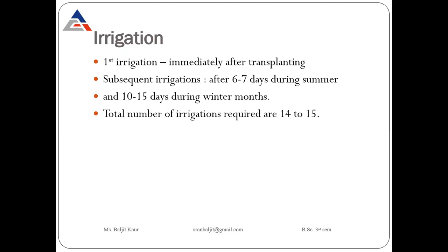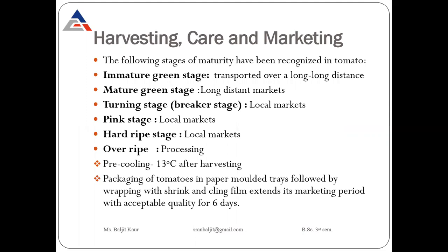During winter months, irrigate at an interval of 10 to 15 days. During summer months the interval is small — six to seven days — and during winter months we should irrigate at an interval of 10 to 15 days. The total number of irrigations required by the tomato crop are 14 to 15.